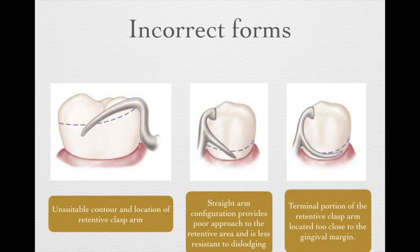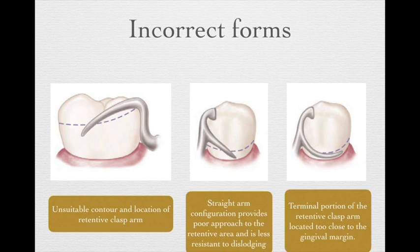Let's look at some incorrect forms for the circumferential clasp. On the left, if you reverse the C-shape, this is not good because when the clasp tries to move, it might hurt the gingiva. In the middle, if you draw the clasp too straight, this straight arm configuration provides a poor approach to the retentive area and less resistance to dislodgement. On the right, the terminal portion of the retentive clasp should be at least 1 mm away from the gingival margin — if too close, it might cause gingival recession.